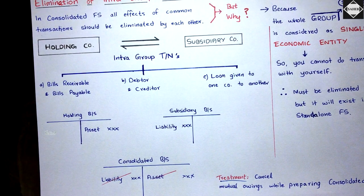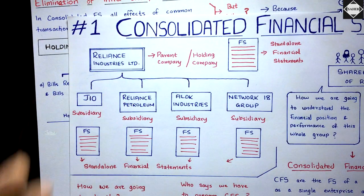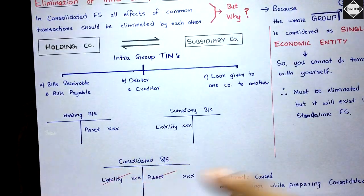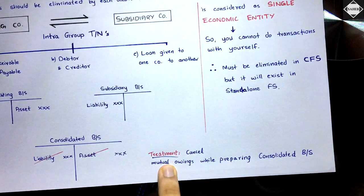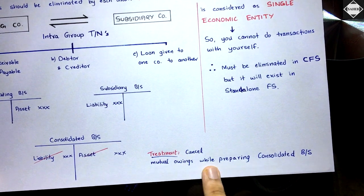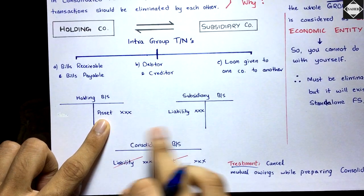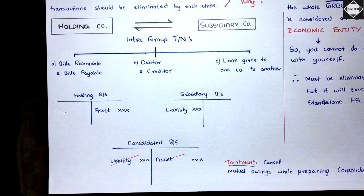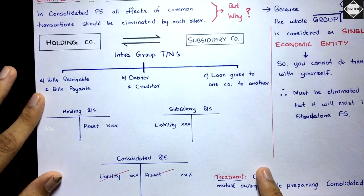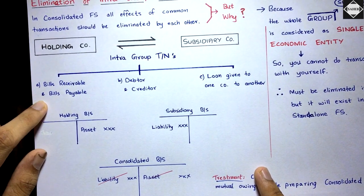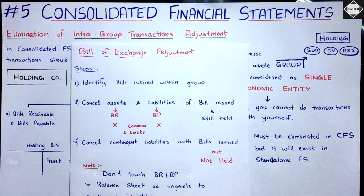So to summarize: intra-group transactions are those that happen within the boundary of the group, and whatever common balances exist in the balance sheet must be eliminated in the consolidated balance sheet. The treatment is to cancel mutual owings. Now let's look at a couple of examples to understand the treatment of bills receivable and bills payable.